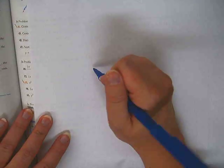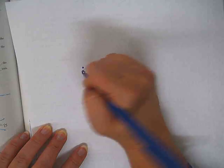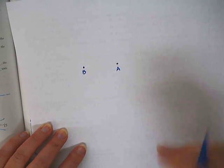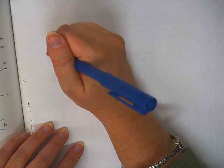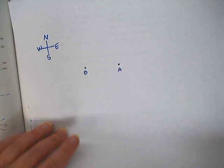Alright, so two people standing two miles apart. So person B is due west of person A. So here's person at point B, person at point A. Okay, so that we have our north, south, east, west.